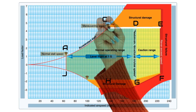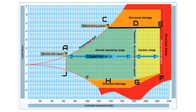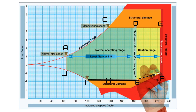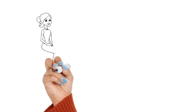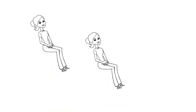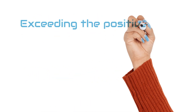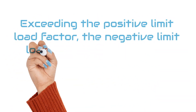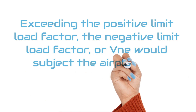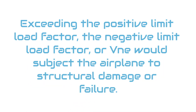The line from point C to point E represents the positive limit load factor, which is the maximum load factor authorized during flight. The lines from point I to point G and from point G to point F represent the negative limit load factor. When the load factor is zero or very small, occupants feel weightless. When the load factor is negative, occupants feel that they are upside down. Exceeding the positive limit load factor, the negative limit load factor, or VNE would subject the airplane to structural damage or failure.